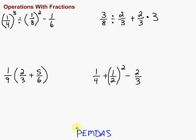P means stuff inside parentheses or grouping symbols. E is exponents. M and D are multiplication and division. Remember, you do both of those from left to right. And then addition and subtraction, we do all addition and subtraction from left to right.